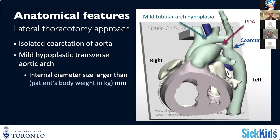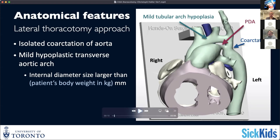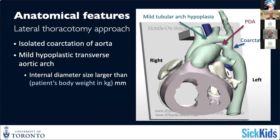As a rule of thumb, we quite frequently use the child's body weight in kilograms as the reference for the size of the transverse arch in millimeters. So if you have a 3.5 kilo child, you would want to see an arch that is at least 3.5 millimeters in size. In the literature, others report that body weight in kilograms plus 0.1 millimeters is what you're aiming for.